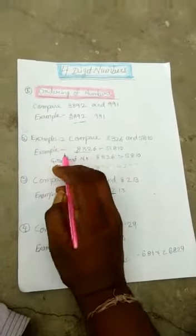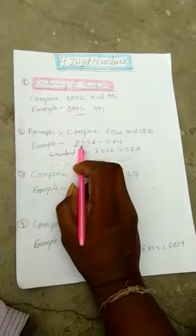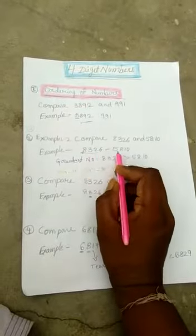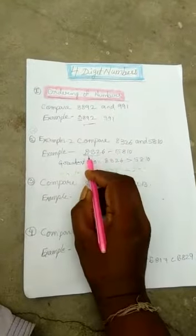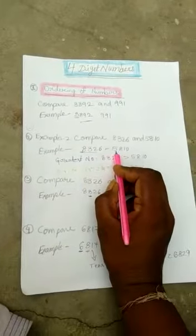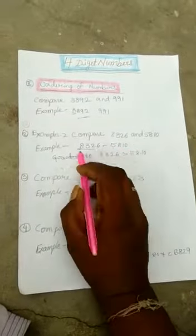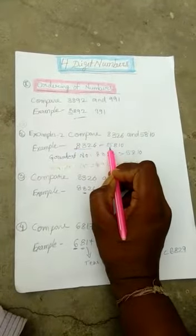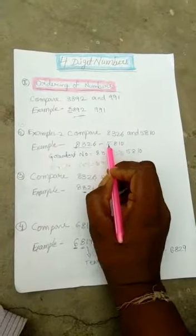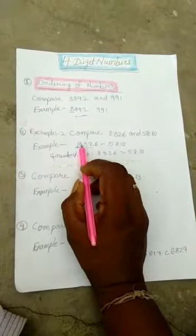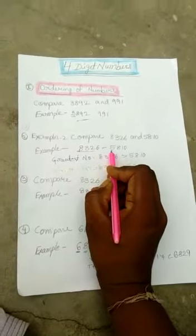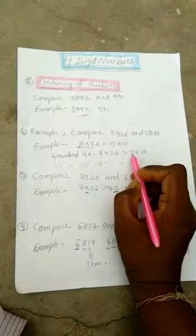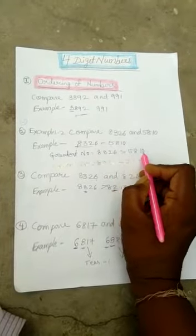Next example: how to compare 8326 and 5810. Here, 8 is in the thousands place and 5 is in the thousands place. First, we compare the thousands place. Thousands place: 8 is greater than 5. So, 8326 is greater than 5810.